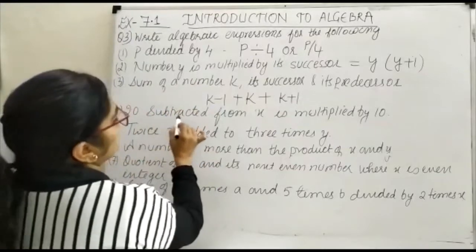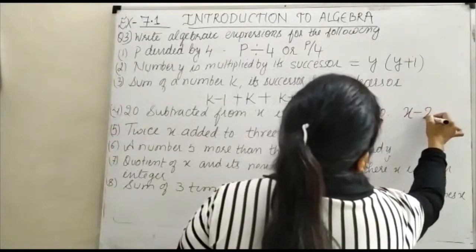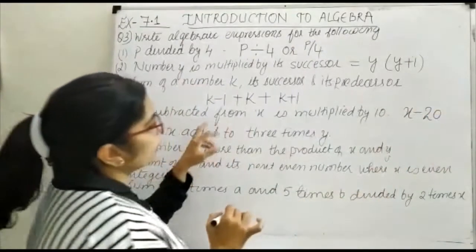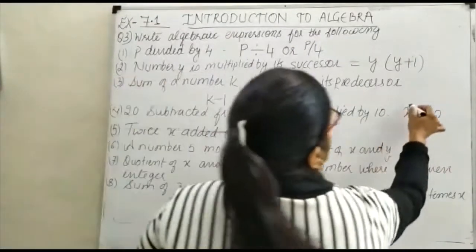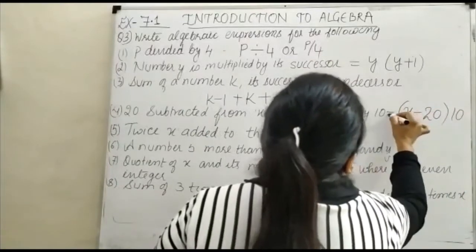Now fourth question: 20 subtracted from x, which is x minus 20, and is multiplied by 10. So the expression is (x - 20) × 10.